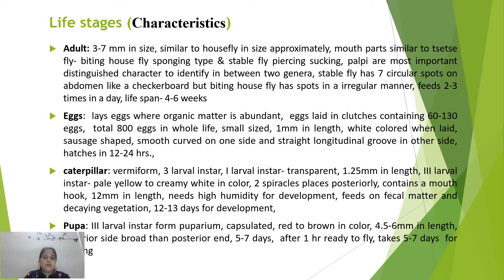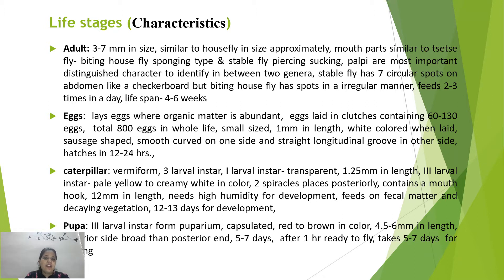Stable flies feed two to three times a day, with an adult lifespan of about four to six weeks. Adult females lay eggs where organic matter is abundant, in clusters of 60 to 130 eggs, laying about 800 eggs over their lifespan. Eggs are small, 1 mm in length, white, and sausage-shaped with a small curved surface on one side and a straight longitudinal groove on the other. Eggs hatch in 12 to 24 hours, producing vermiform larvae.